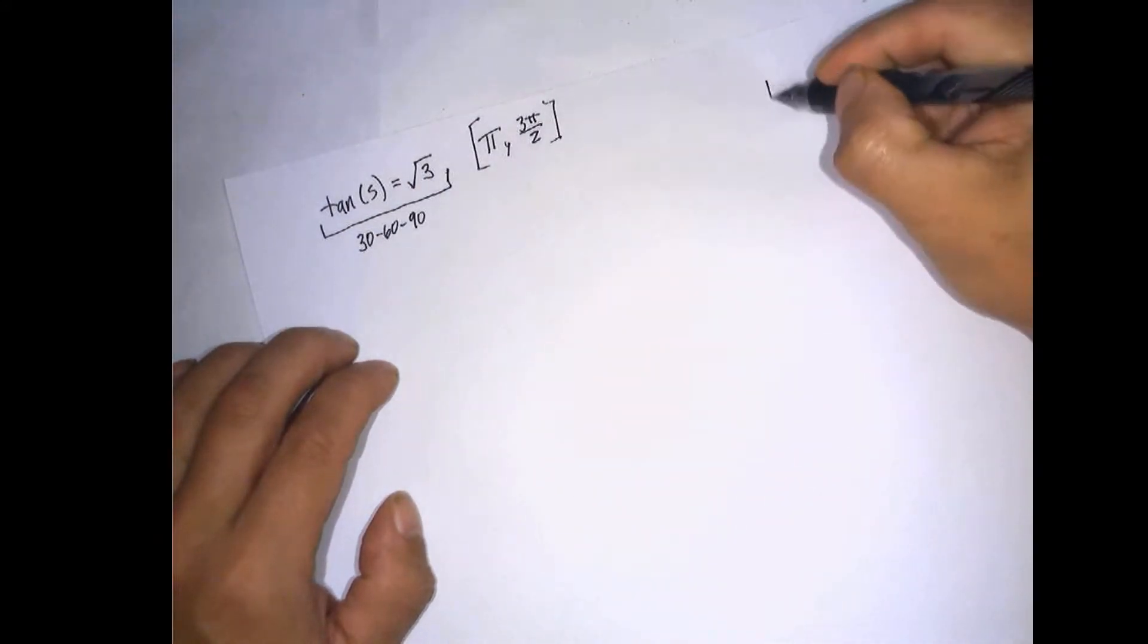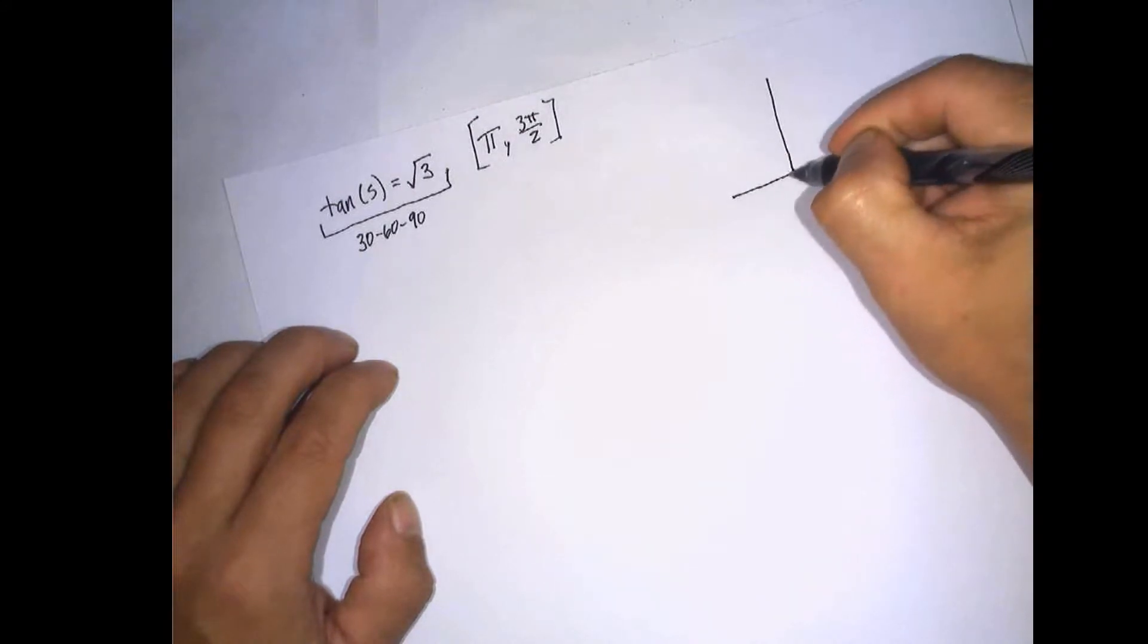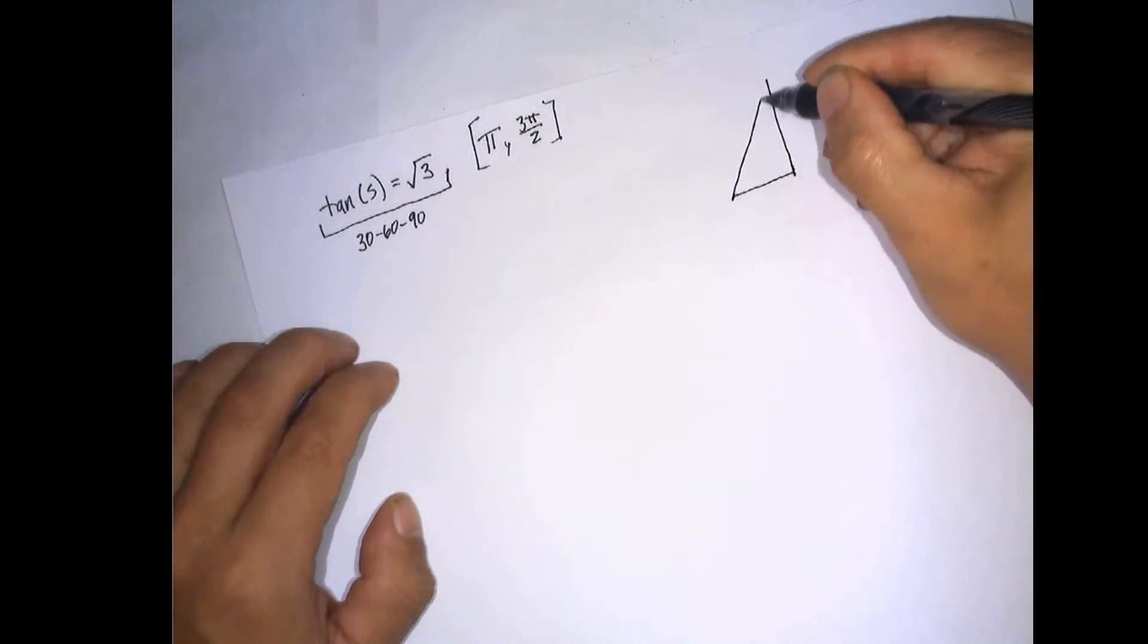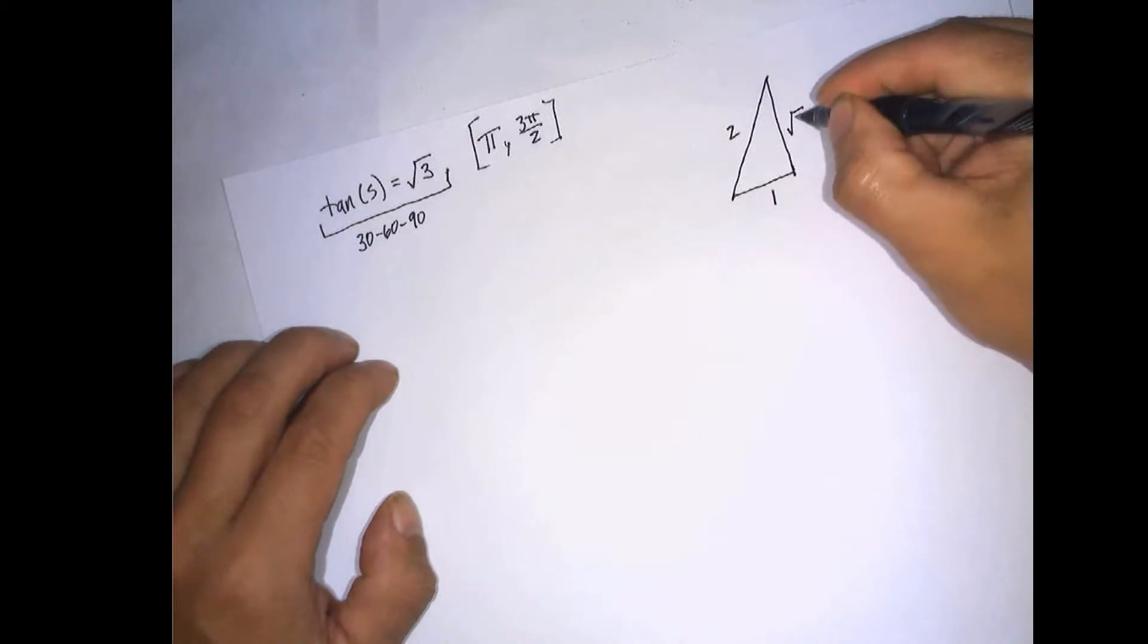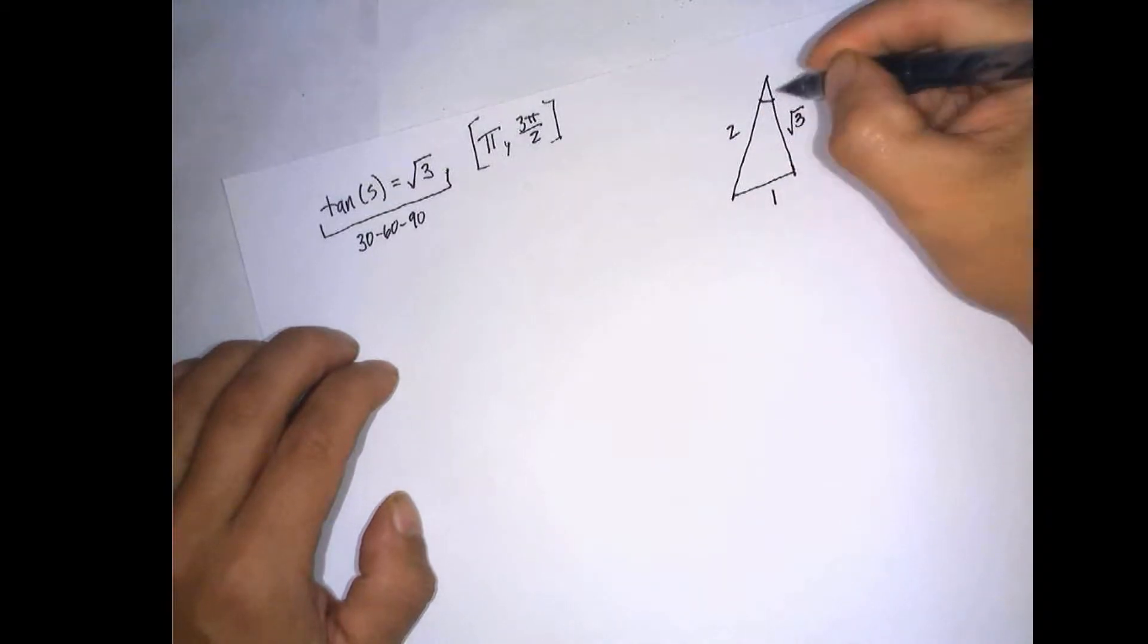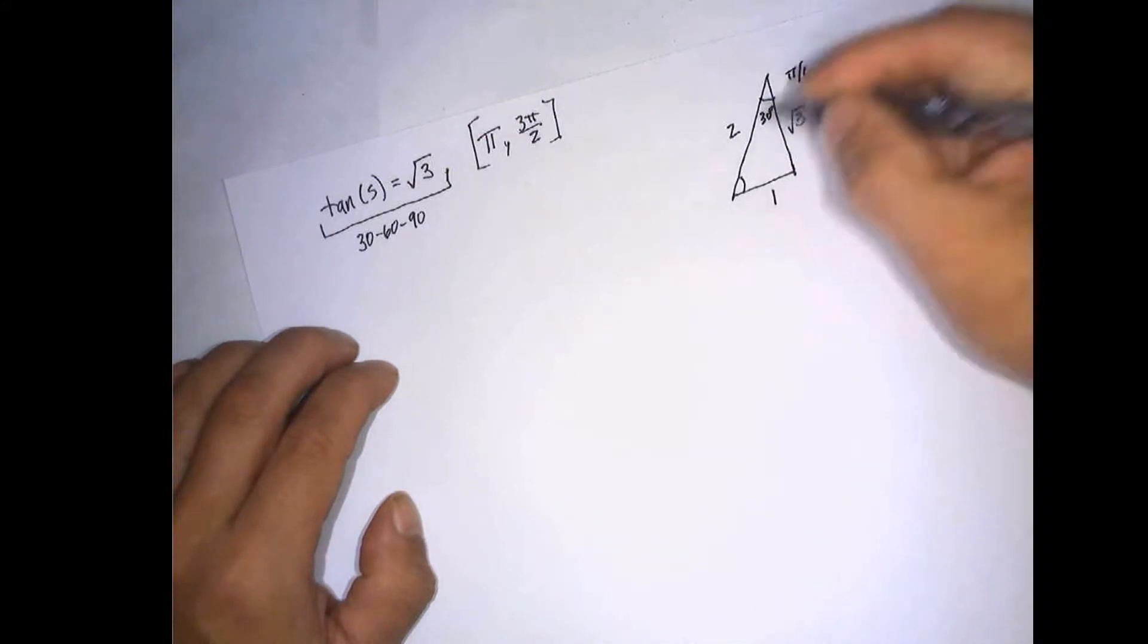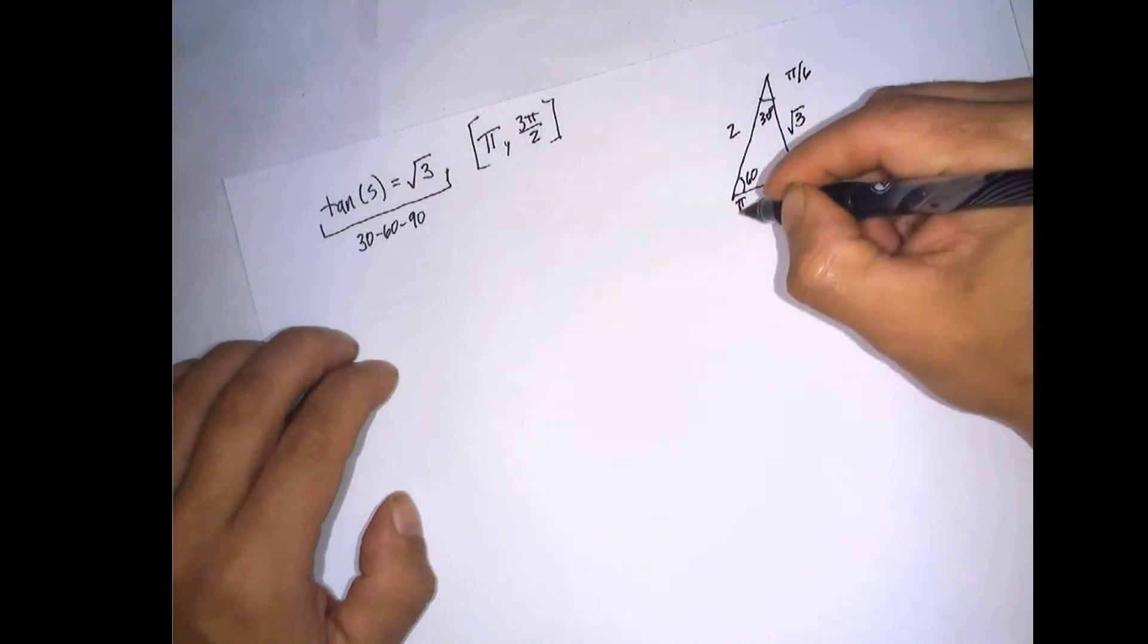And if you remember a 30, 60, 90 triangle, it looks like this. Where this is 1, and this is 2, and this is the square root of 3. This is 30 degrees, or pi over 6, and this is 60 degrees, or pi over 3.